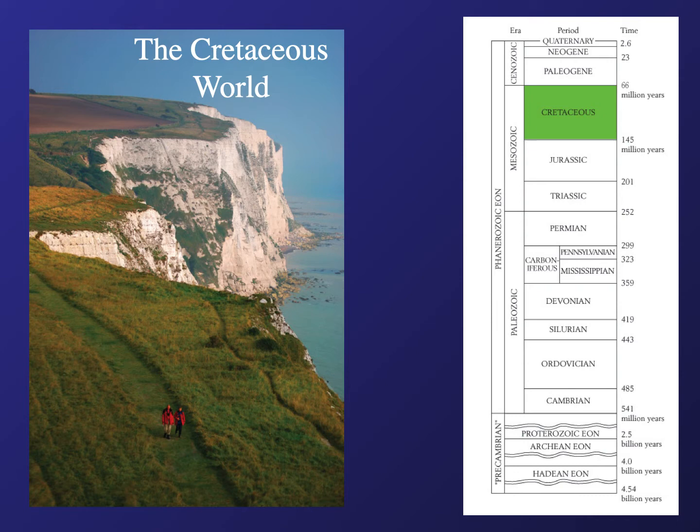The picture on the left is from the White Cliffs of Dover, a famous chalk deposit that is Cretaceous in age over in England. It's very bright white and is composed of all the skeletons of little things called radiolarians and diatoms that died and sunk to the bottoms of the oceans. There were so many of them they just built up these huge layers on the ocean floor.